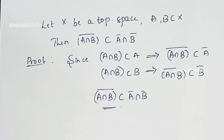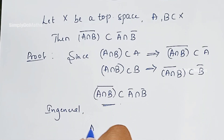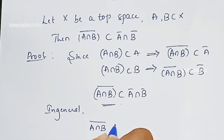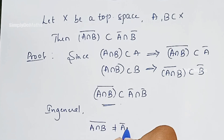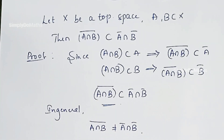In general, the closure of A intersection B is not equal to the closure of A intersection the closure of B. Let us prove this by one contrary example.